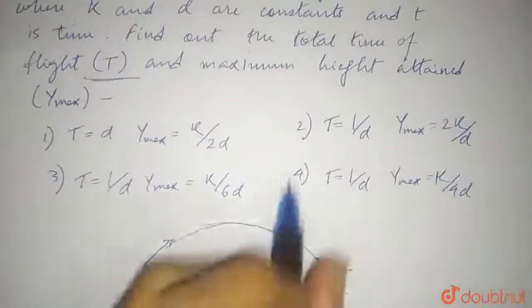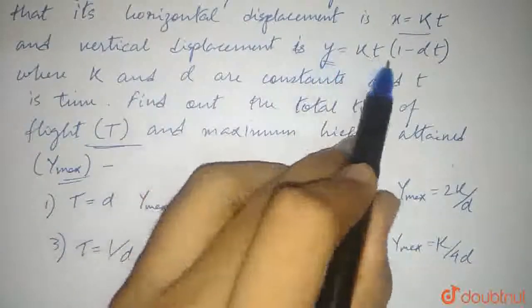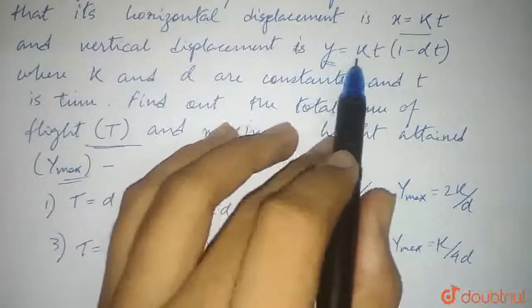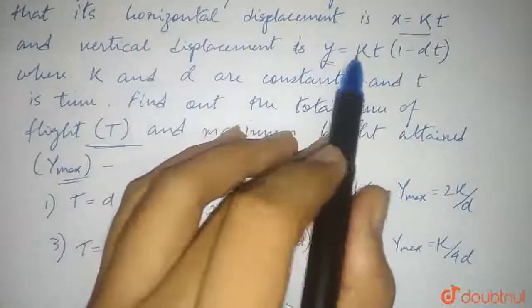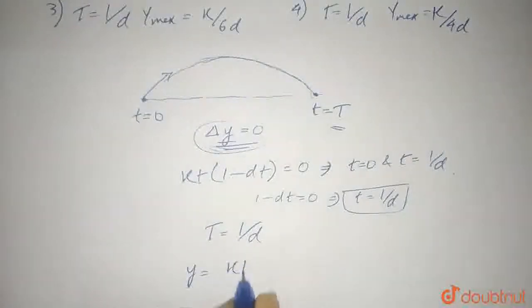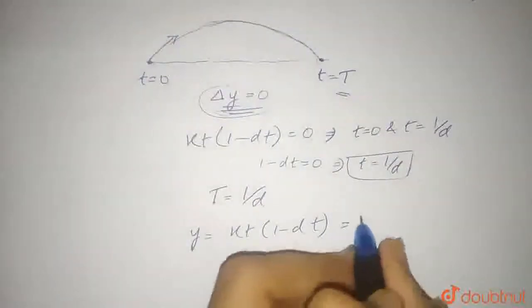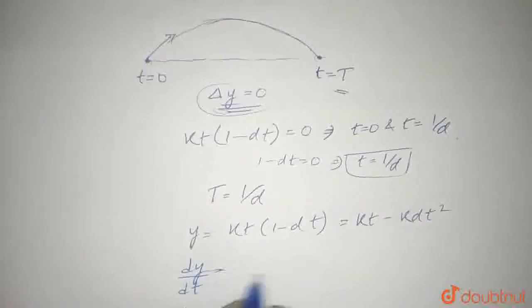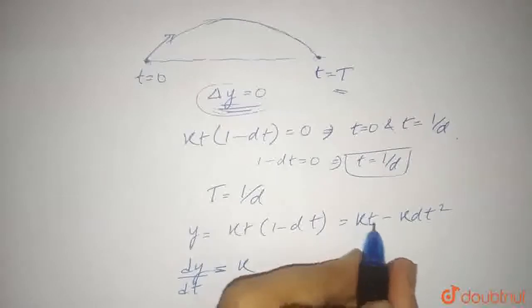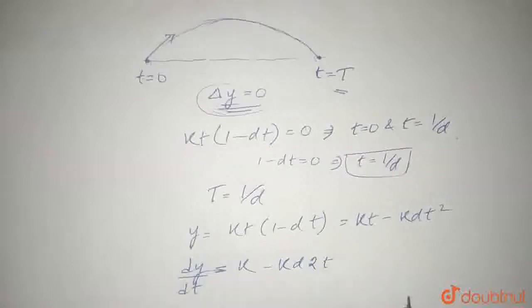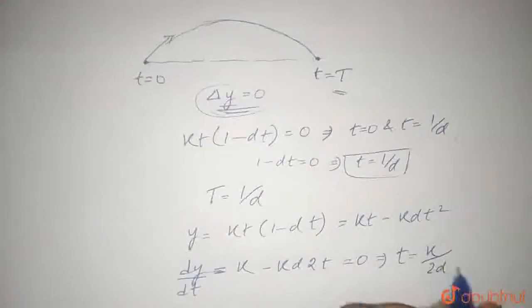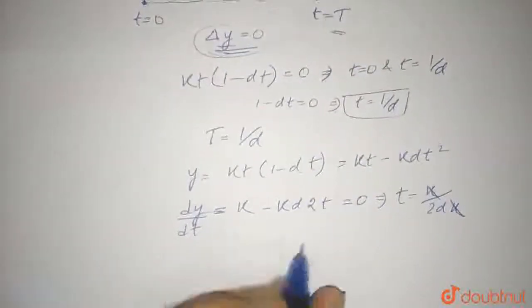Now, we are asked for the maximum height attained, y_max. For maximum height, dy/dt must be equal to 0. When the derivative of a function is 0, the function has attained its maximum (or minimum) value. So we take y = kt(1 − αt) = kt − kαt², and differentiate: dy/dt = k − 2kαt. Setting this equal to 0 gives t = 1/(2α).